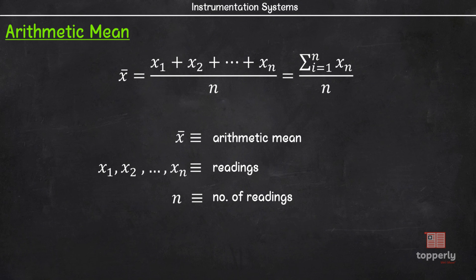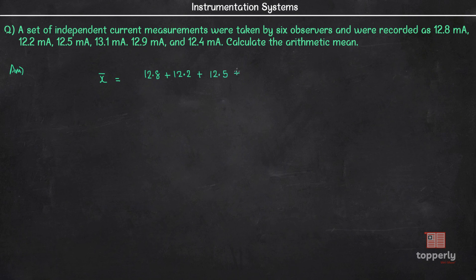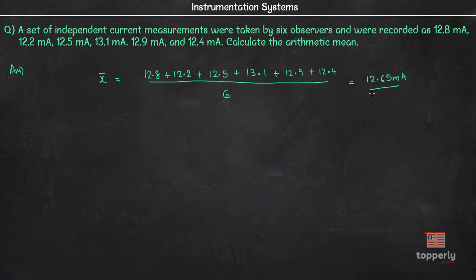Let's take an example to make the concept more clear. A set of independent current measurements were taken by 6 observers and were recorded as 12.8 mA, 12.2 mA, 12.5 mA, 13.1 mA, 12.9 mA and 12.4 mA. Calculate the arithmetic mean. The arithmetic mean x̄ is obtained by (12.8 + 12.2 + 12.5 + 13.1 + 12.9 + 12.4) / 6, which is equal to 12.65. So this is the arithmetic mean.